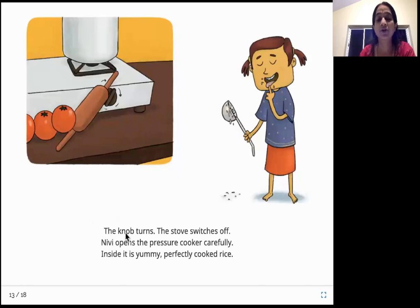The knob turns. The stove switches off. Nivi opens the pressure cooker carefully. Inside, it is yummy, perfectly cooked rice. So the rolling pin had switched off the gas stove. After the pressure is completely cooled down, she opens and checks to see if the rice is cooked properly and the rice is cooked very nicely.